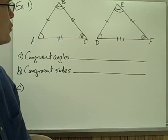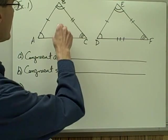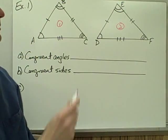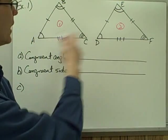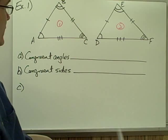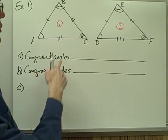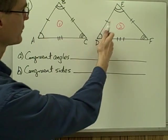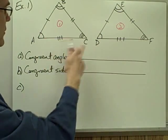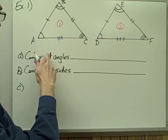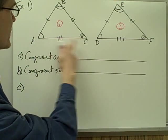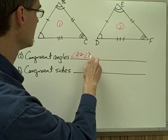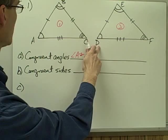Example number one. We have these two triangles here. Let me go ahead and label this triangle number one and triangle number two. Sometimes it's useful to be able to distinguish the two triangles. The first thing I want to do is identify all the congruent angles on these two triangles. I've got my curved hash marks in all the angles, so let me write down what pairs of angles I have congruent. I see angle A and angle D — angle A is congruent to angle D. That's one pair of congruent angles.